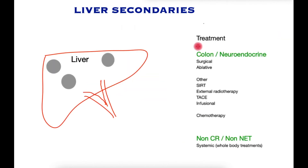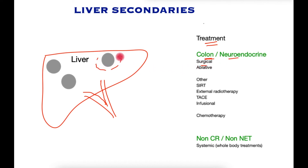Treatment for each patient is individualized according to the cancer type, the stage of the disease, and the patient's fitness. Commonly for colon cancer metastases and neuroendocrine tumor metastases, surgery is the first choice, aiming at removing the cancers individually or removing the part of the liver which bears the cancer.